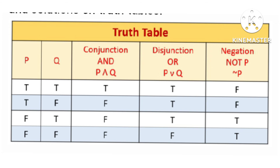Negation is very simple and straightforward — it is the opposite. True becomes false, and false becomes true. So true negated gives false, and false negated gives true. It is simply the opposite.